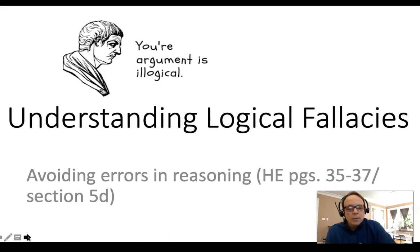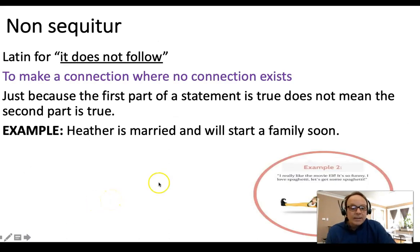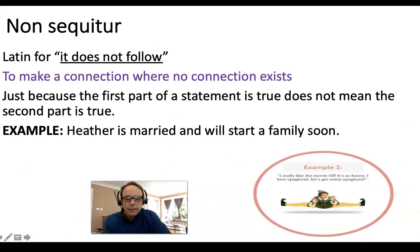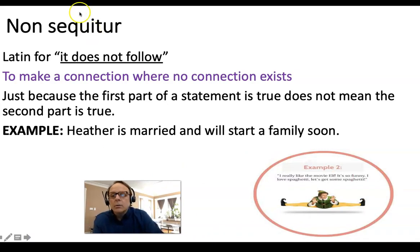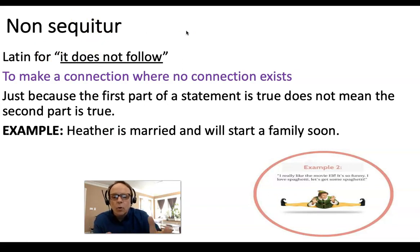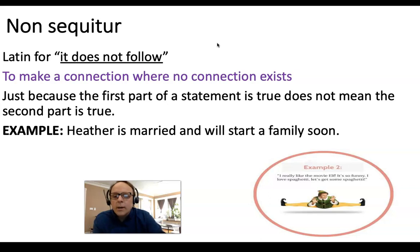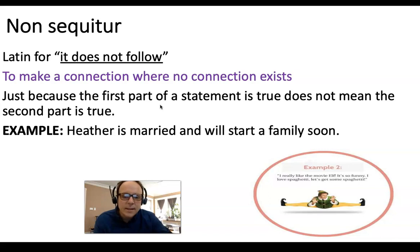At the end of the video, I'll give you a little quiz to see if you can recognize examples of these fallacies. We're going to look at eight of them. The first is called a non sequitur — this comes from Latin and means 'it does not follow.' In other words, we make a connection where there's really no connection. Just because the first part of a statement is true, we assume the second part is also true, but that's not always the case.